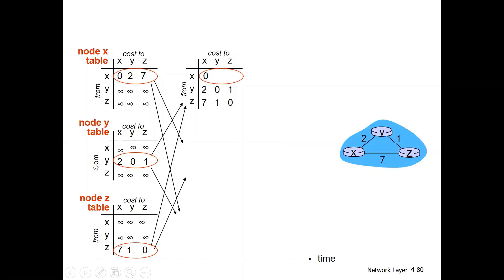Similarly, Y has its distance vector. The self-node cost — y to y — is 0, and y to z is the direct cost. In Z's distance vector, the neighbor distance vectors are also initialized to infinite. The red color indicates updated information when the distance vector changes.